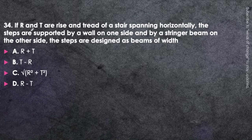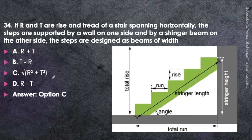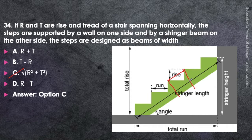Next question: If r and t are the rise and tread of a stair spanning horizontally, where the steps are supported by a wall on one side and a stringer beam on the other, the steps are designed as a beam of width equal to √(r² + t²) — option C is correct. This is the rise, this is the tread, and this length — the hypotenuse — is the width of the beam for one step, running parallel to the stringer beam.